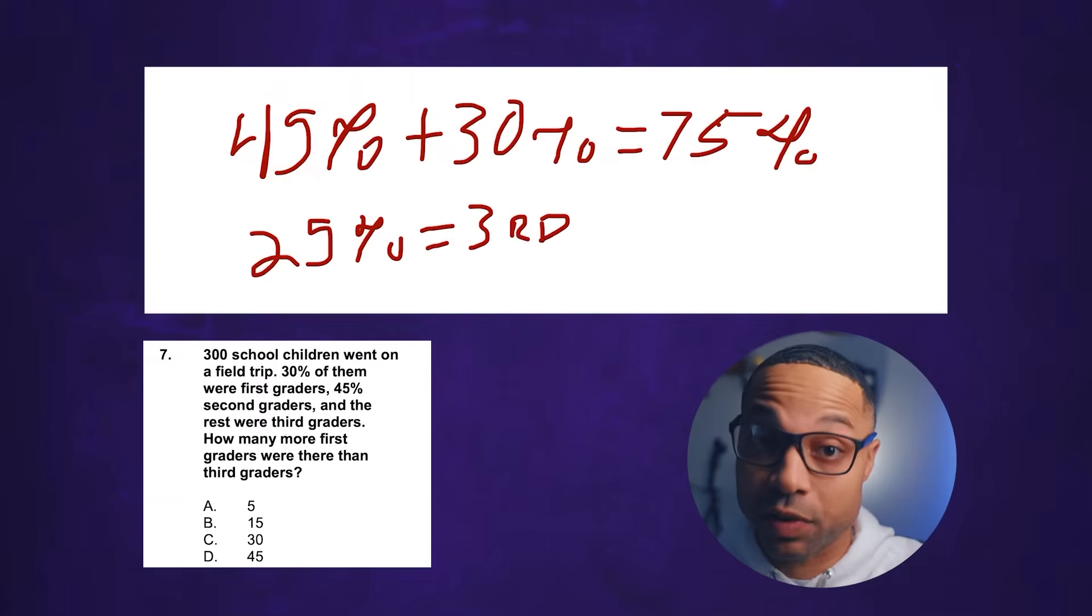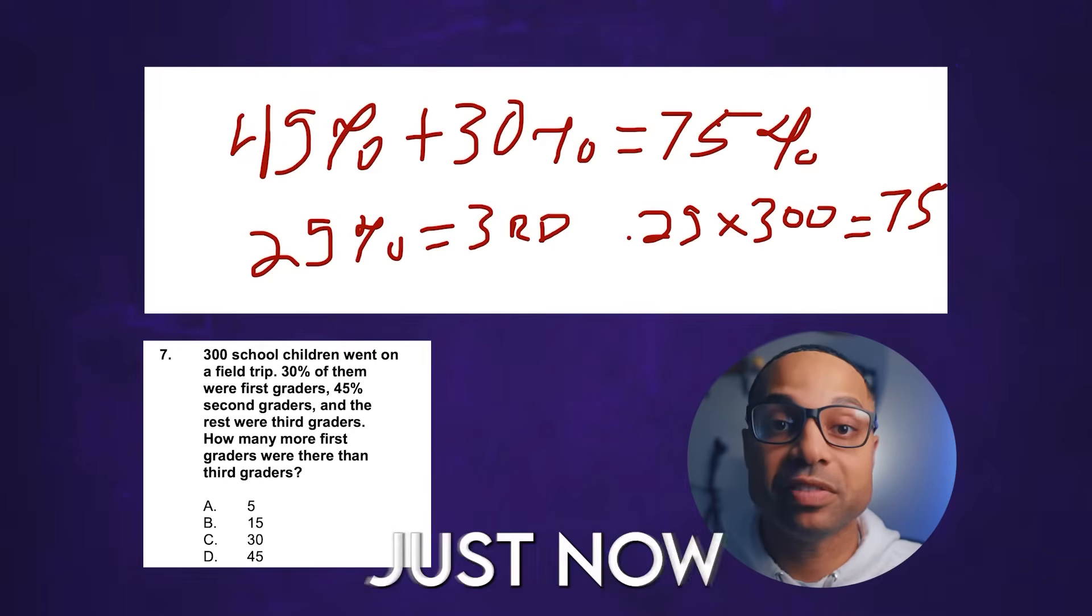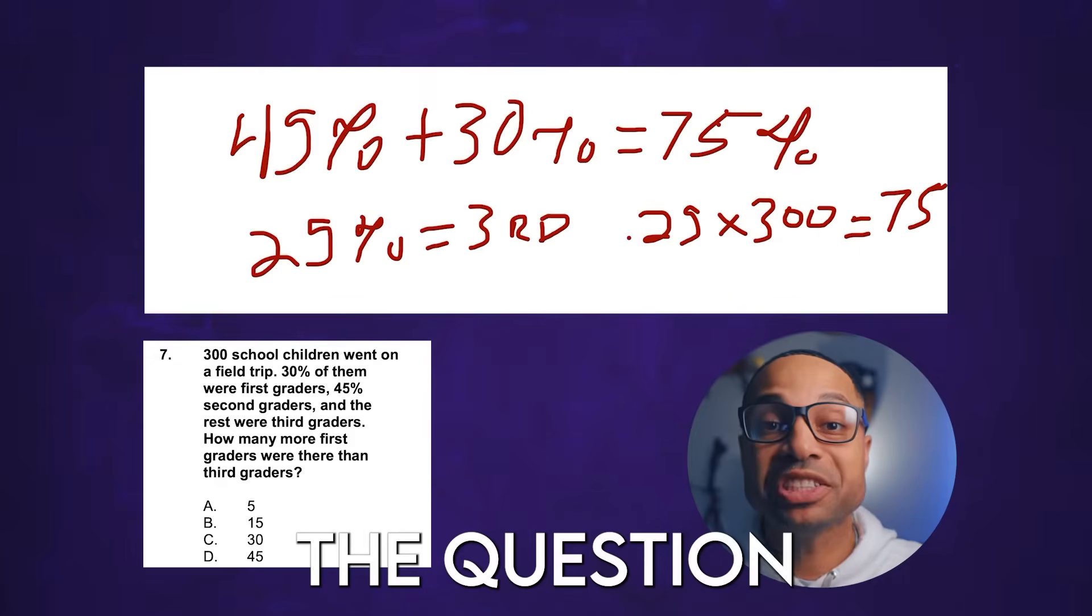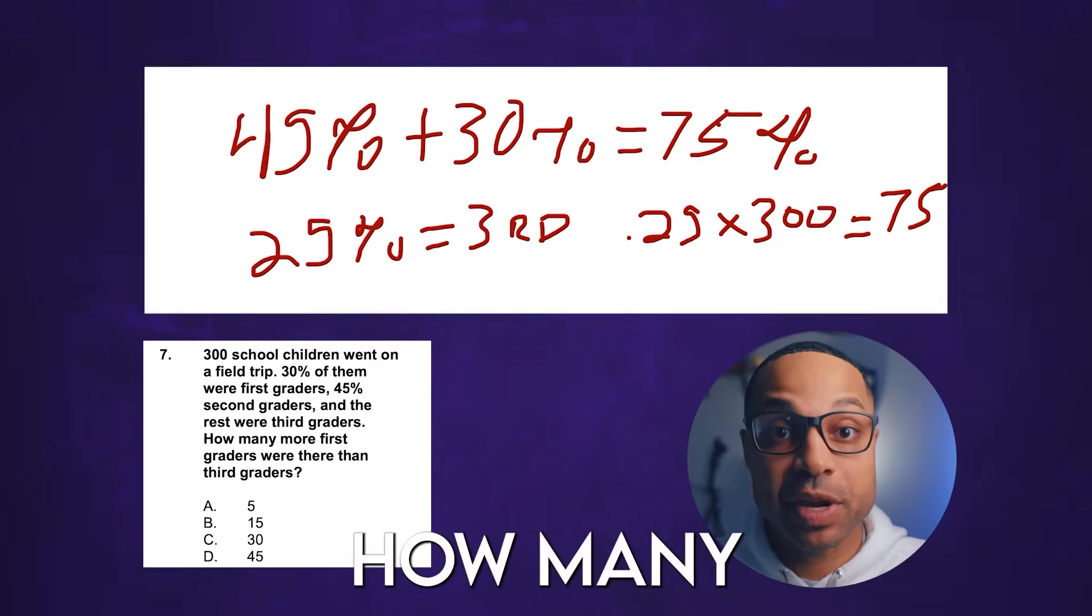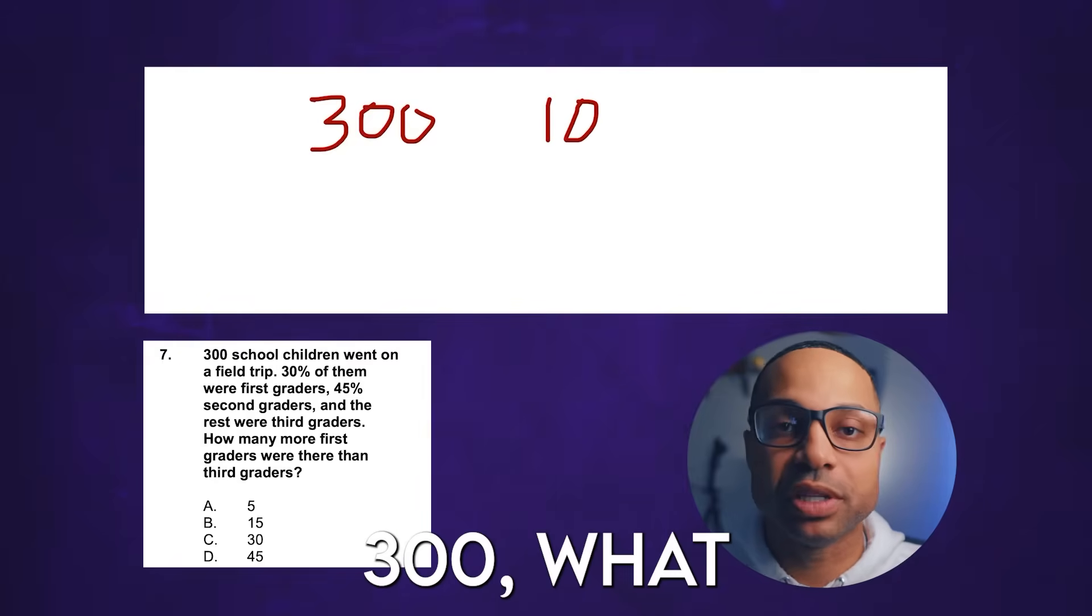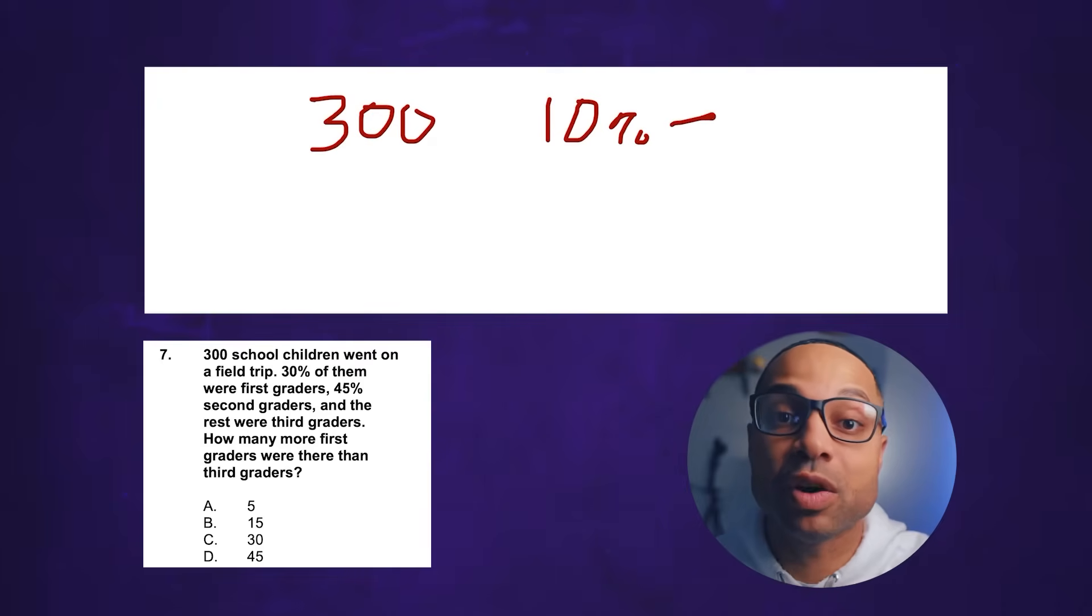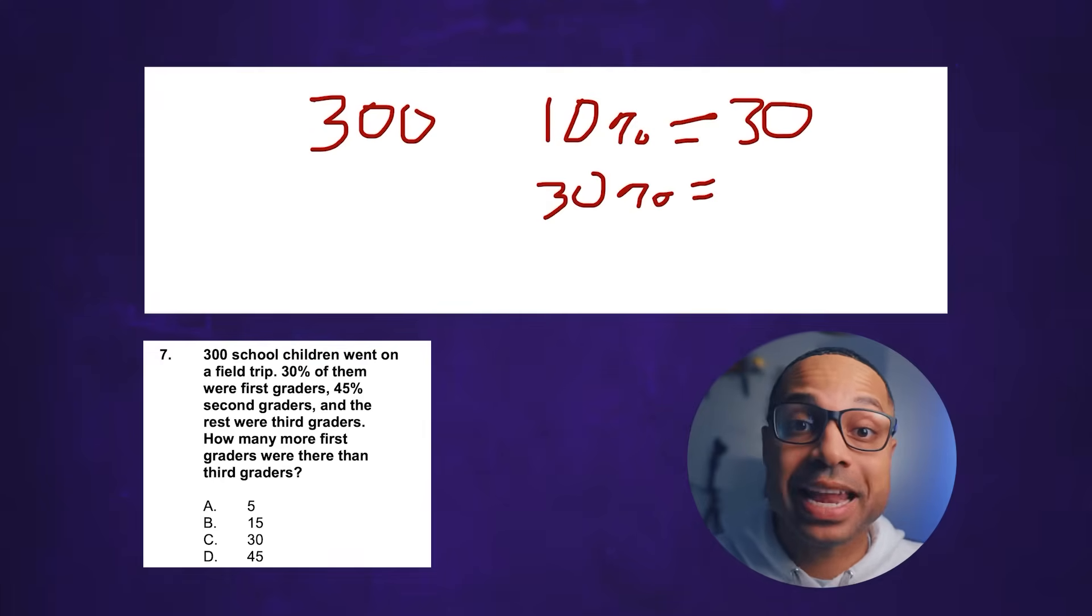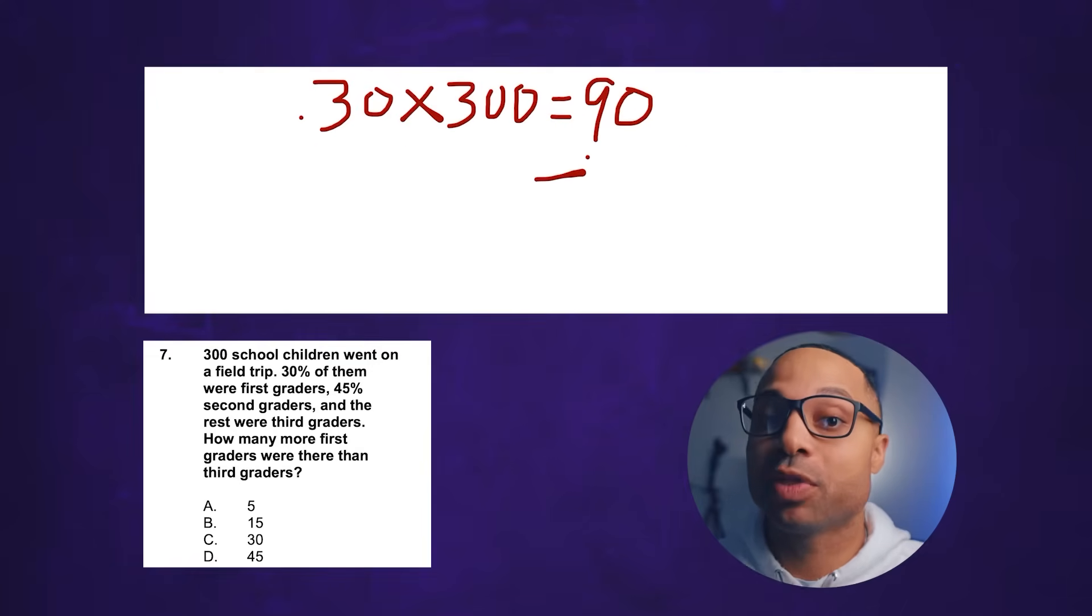So now that we know 25 percent of the field trippers were third graders, what is 25 percent of 300? You can turn 25 percent into a decimal, put a decimal before the 25 and times that by 300 and that'll give you 75. We have just now determined that there are 75 third graders on this field trip. The question asks how many more first graders were there than third graders. So the word problem says that 30 percent of the field trippers were first graders. So we can ask what's 10 percent of 300. 10 goes into 300 thirty times. So if we know that 10 percent of 300 is 30 all you have to do is multiply 30 times 3 and that gets you 90. So now we know that there are 90 first graders and there's 75 third graders. You just subtract 75 from 90 which equals 15.